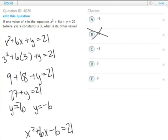We can set the equation to 0 by subtracting 21 from both sides. So the equation is now x² + 6x - 27 = 0.